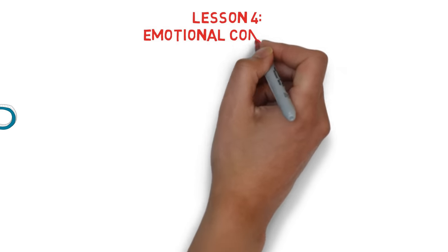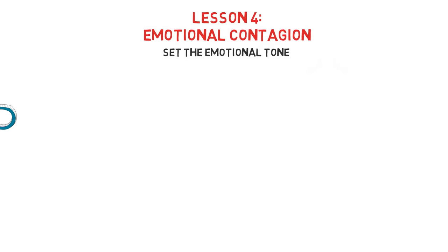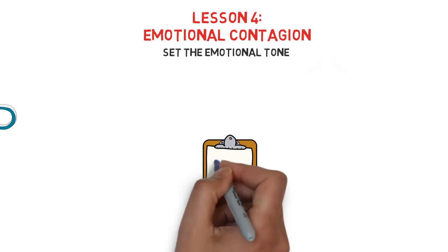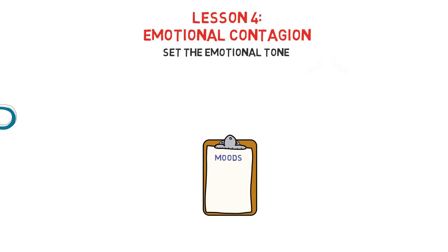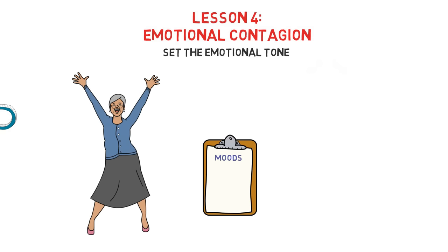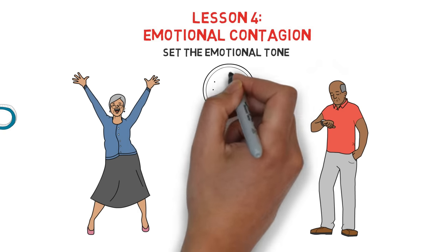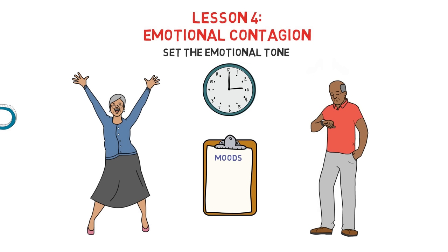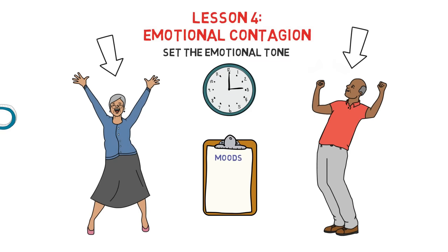Lesson four, emotional contagion. Set the emotional tone. So in a simple experiment, two volunteers filled out a checklist about their moods at the moment, and then sat facing each other quietly, waiting for the experimenter to return to the room. Two minutes later, she returned and asked them to fill out the mood checklist again. The pairs were purposely chosen so that one partner was highly expressive of emotion, and one who appeared flat and expressionless. It turns out that the mood of the expressive person had been transferred to the expressionless person.